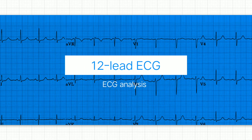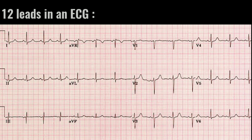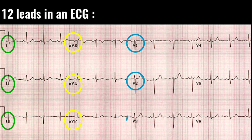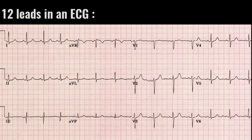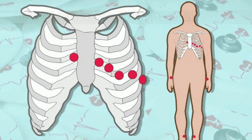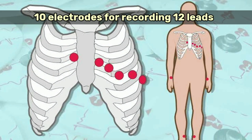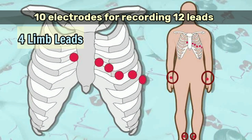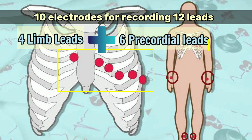Our goal is to obtain a 12-lead ECG. The 12 leads are lead 1, 2 and 3; AVR, AVL, and AVF; and leads V1, V2, V3, V4, V5, and V6. For recording these 12 leads, we need a total of 10 electrodes, out of which 4 electrodes are placed on all 4 limbs — hence known as limb leads or limb electrodes — while 6 are placed on the chest, hence called precordial leads, V1 to V6.